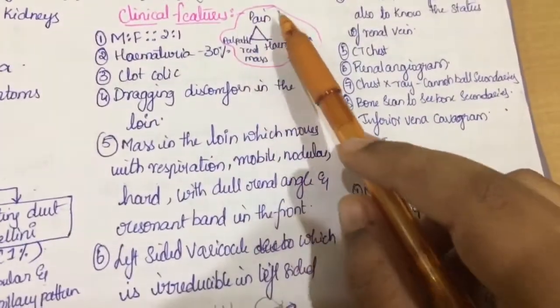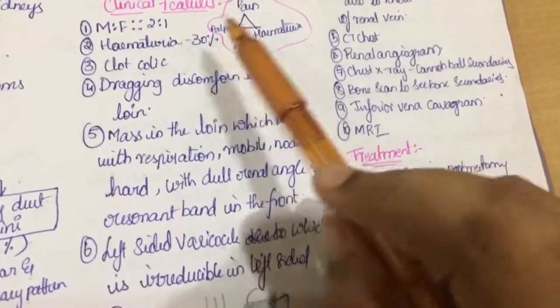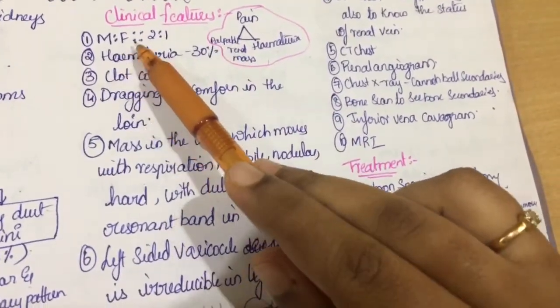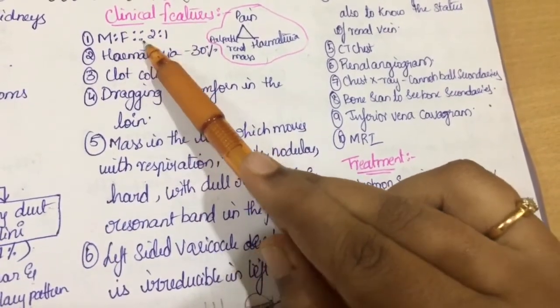Next, clinical features. They are triad of features. Pain, palpable kidney mass or renal mass and hematuria. Clinical features. They are most common in males than females and accounts per ratio of 2 is to 1.